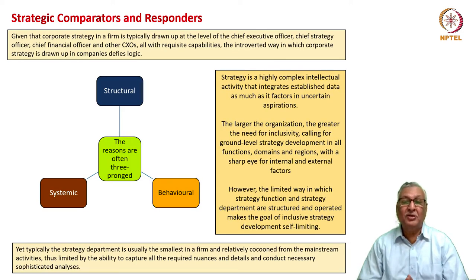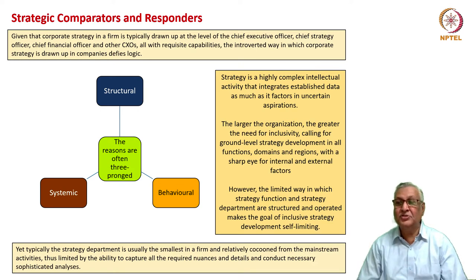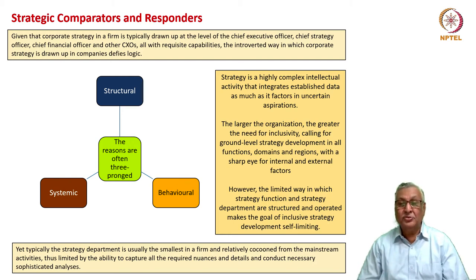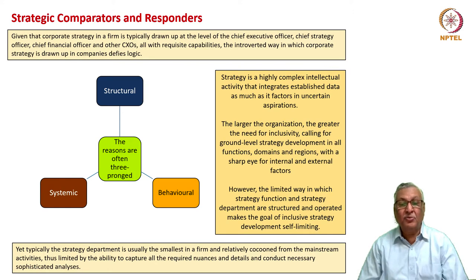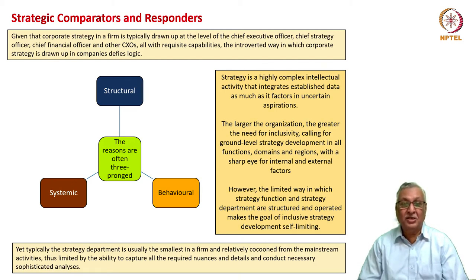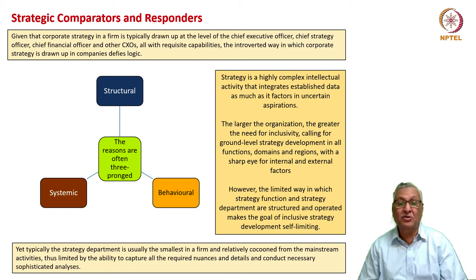The strategy of a firm is typically drawn up at the level of the CEO, Chief Strategy Officer, and other CXOs, who have the capabilities to do strategic planning thoroughly. However, strategy tends to be a very introverted and cocooned activity. The reasons are three: structurally, a company is said to behave in a particular way; systemically, ingrained processes dictate strategy is done in a limited way; and mindsets and emotional dynamics lead to strategy being drawn up in a suboptimal way.